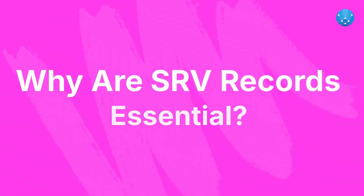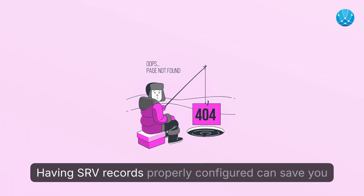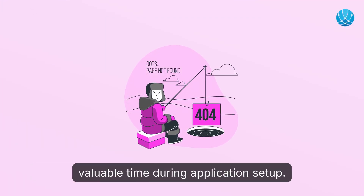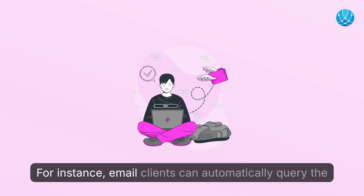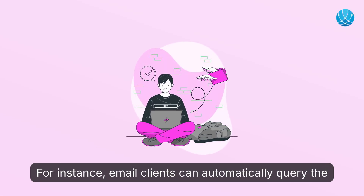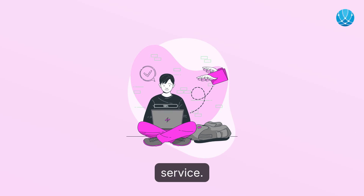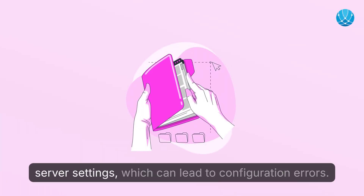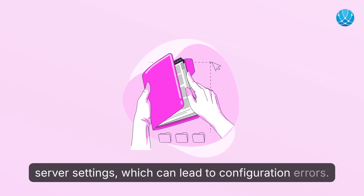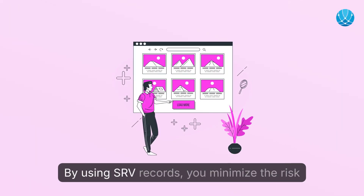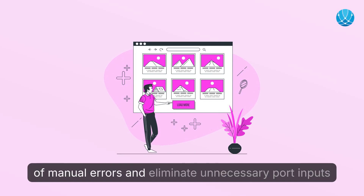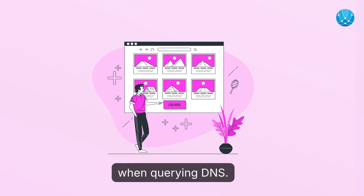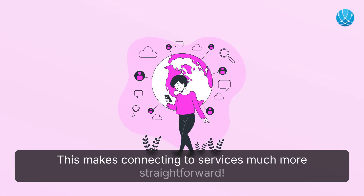Why are SRV records essential? Having SRV records properly configured can save you valuable time during application setup. For instance, email clients can automatically query the DNS for relevant SRV records related to their service. Without these records, users often have to guess server settings, which can lead to configuration errors. By using SRV records, you minimize the risk of manual errors and eliminate unnecessary port inputs when querying DNS. This makes connecting to services much more straightforward.